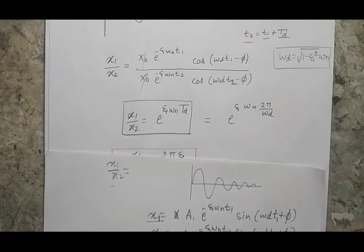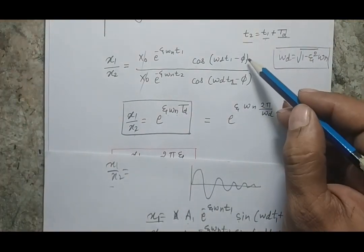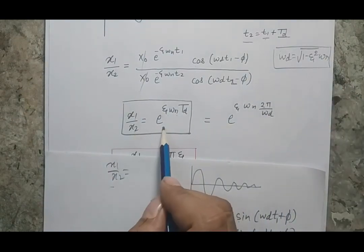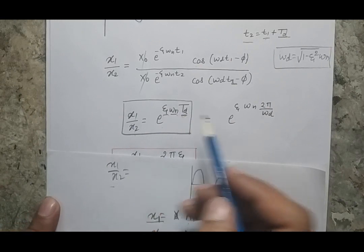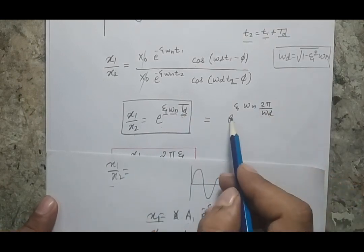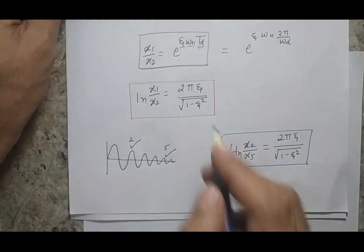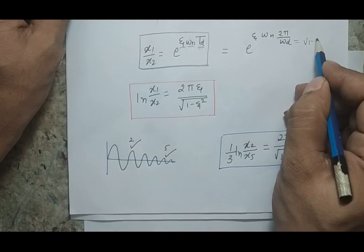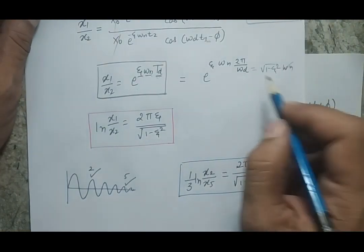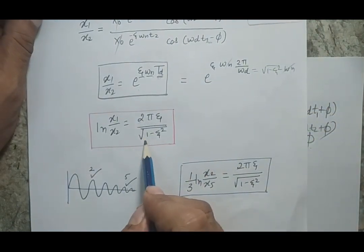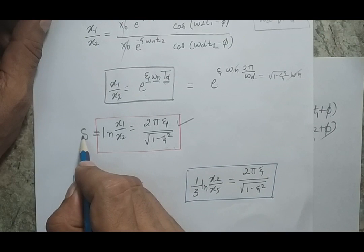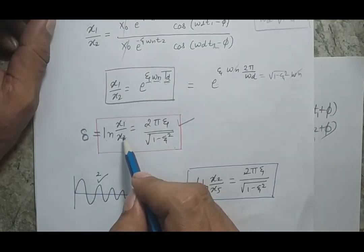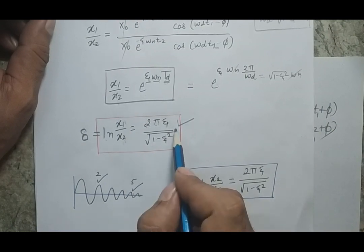I would request students not to memorize this blindly. The key idea is that I am taking the ratio of two amplitudes using the response equation and rearranging terms. Here ζ is the damping ratio, ωₙ is the natural frequency, and ωd is the damped natural frequency. When I substitute Td = 2π/ωd and take the natural log of both sides, since ωd = ωₙ√(1−ζ²), the ωₙ terms cancel. The final expression is: δ = ln(x1/x2) = 2πζ / √(1 − ζ²). This quantity δ is the logarithmic decrement.